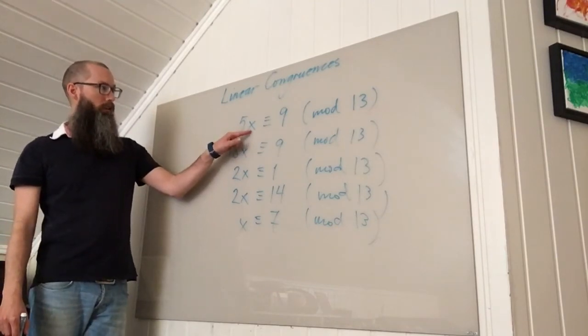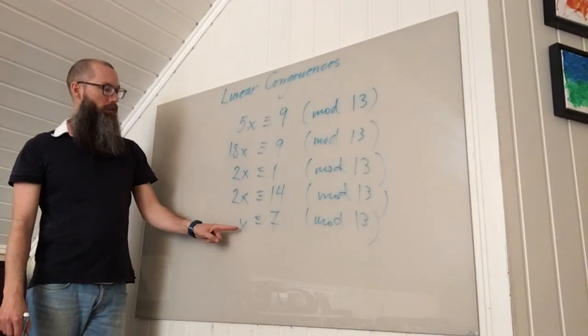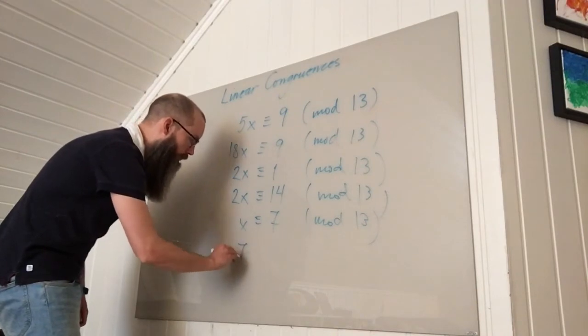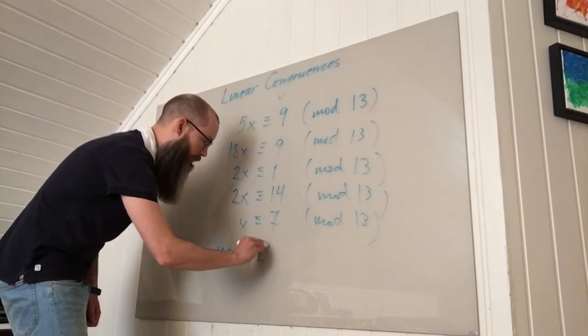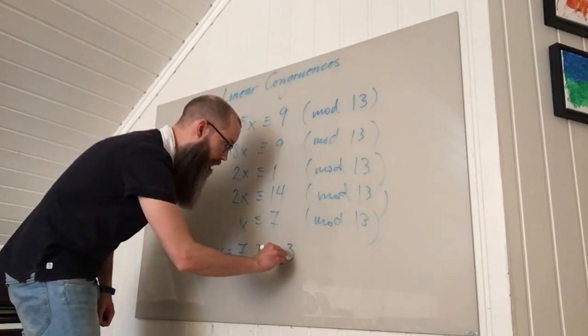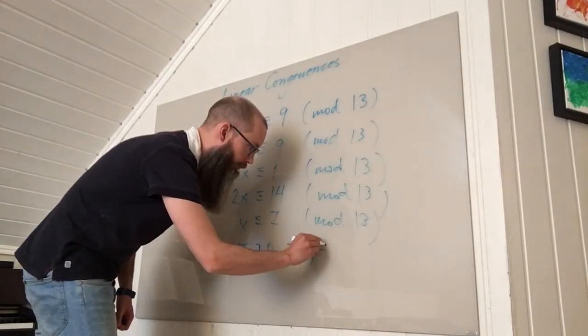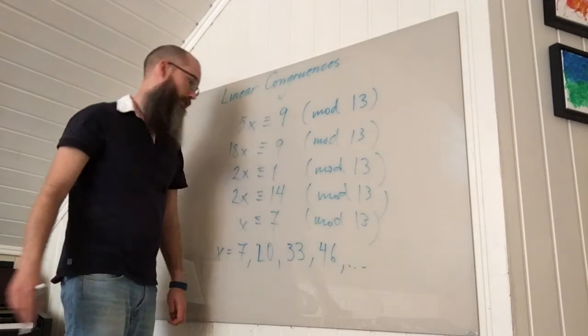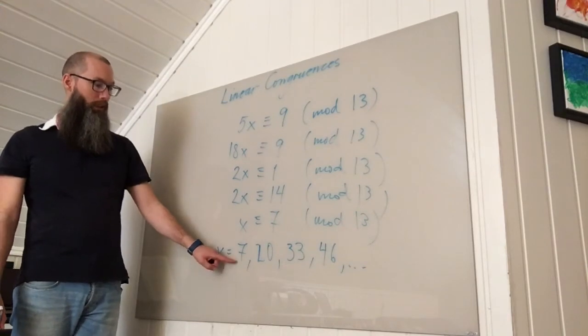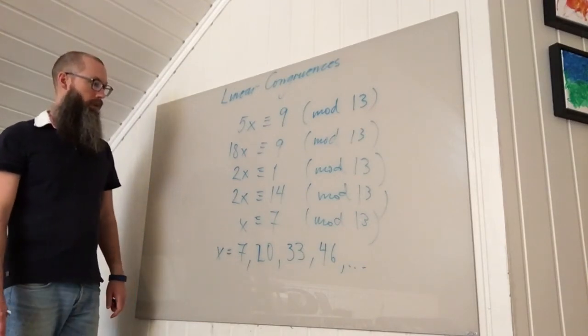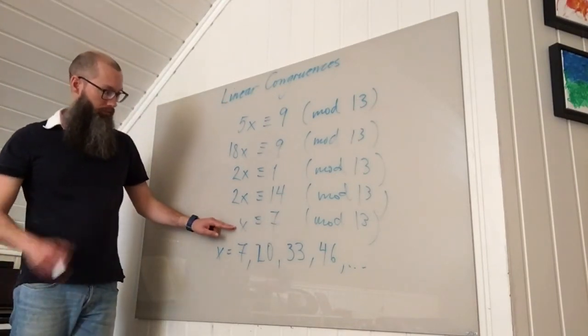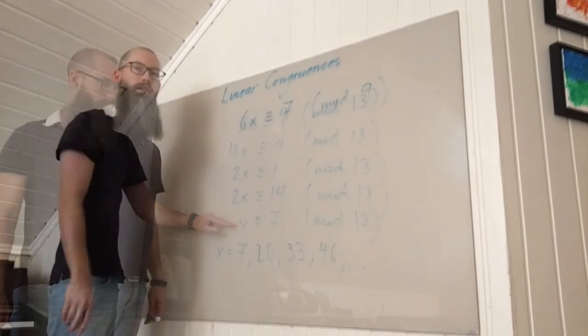All of the integers that solve this congruence are the integers congruent to 7 mod 13. So they are, for instance, 7 and 20. The next one is 33, and so on—46, and so on. You can simply add 13 to this or subtract 13, so you also get the negative ones: minus 6, minus 19, and so on. So all of these solve it, but it's better to just state this because that sums up all of the solutions.